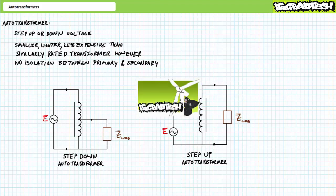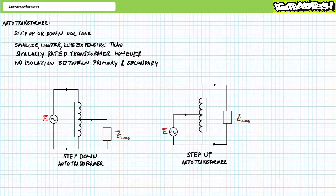Recall in the transformers lecture, available at the Big Bad Tech channel, we introduced the electrical device known as the transformer. Traditional transformers use a pair of inductively linked windings to step up or step down applied voltage and provide a means of electrically isolating one system from another. An auto transformer is a special type of transformer with only one winding, and that single winding or portions of it serve as both primary and secondary.